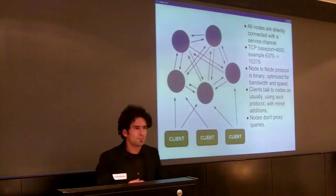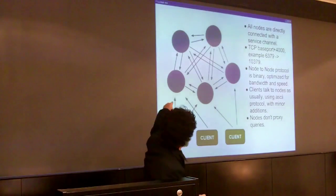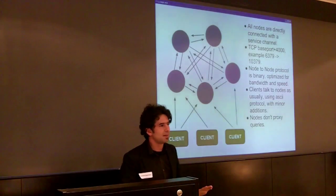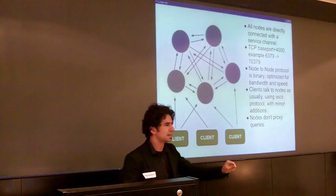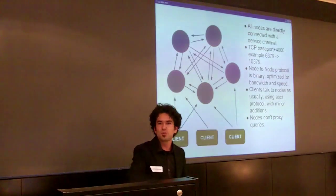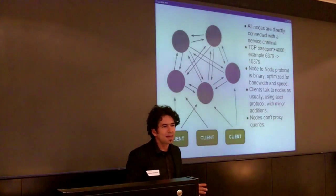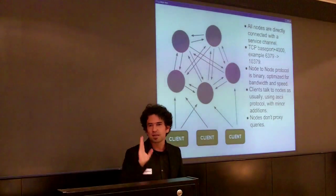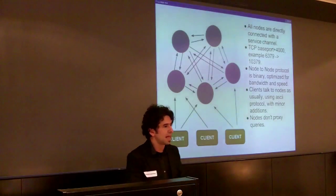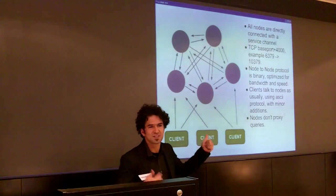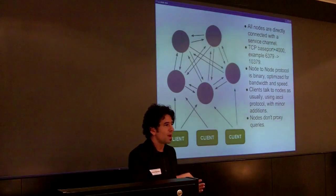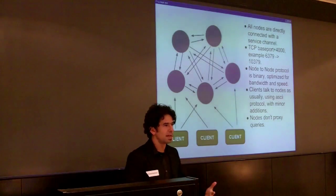Another very important idea of Redis cluster is that there is no node-to-node proxying. Because I think every schema where there is node-to-node proxying is going to be slow. It's a matter of fact. If there is routing of messages, why shouldn't clients just contact the right node directly? So we completely abolished it. It was a lot of C code to write to do the proxy, and to obtain a bad effect didn't make sense.